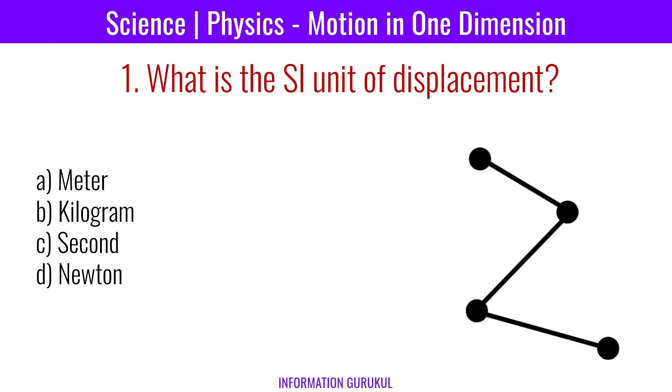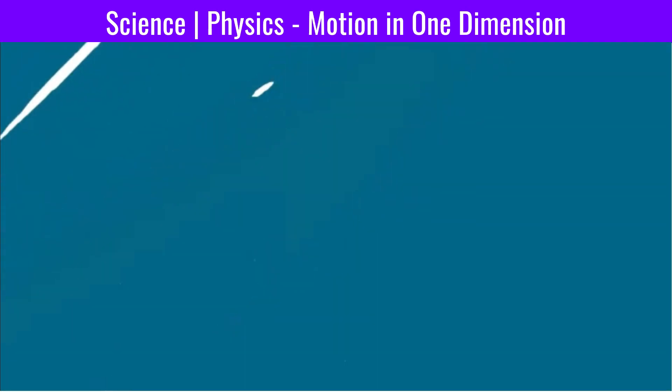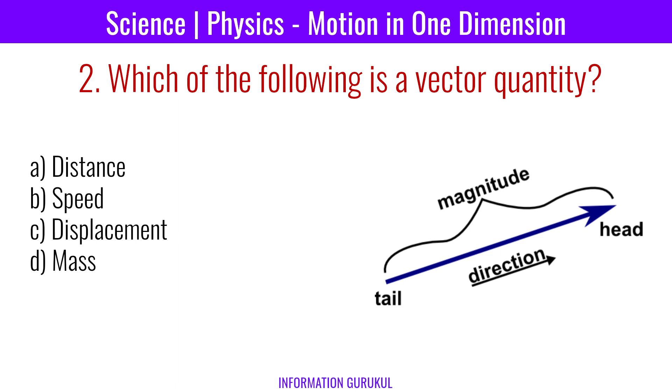Today we will cover the MCQ of motion in one dimension. Question number one: What is the SI unit of displacement? Meter. Which of the following is a vector quantity? Displacement.